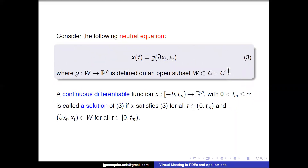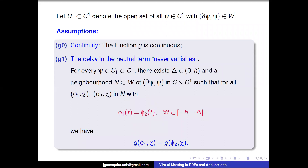Here is our equation again. A continuously differentiable function is called a solution if it satisfies the equation and if the pair belongs to Ω or W, where W is an open subset of the relevant set. The first condition is about continuity: we ask that G is continuous. The second condition is very important — we want to ensure that the neutral term delay never vanishes, because if the delay in the neutral part were zero, we would lose the neutral character of the equation.